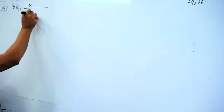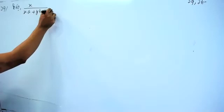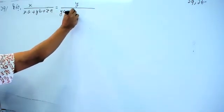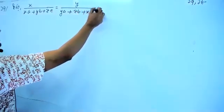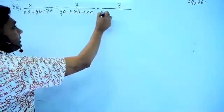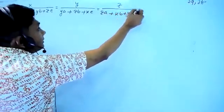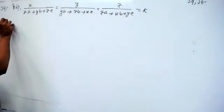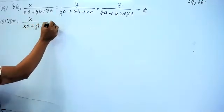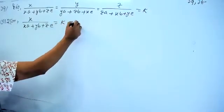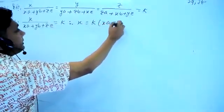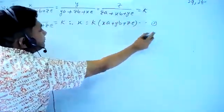x y: x a plus y b plus z c. y by y a plus z b plus x c. y by z a plus x b plus y c. 6y: x a plus y b plus z c equals 7k, so x equals k into x a plus y b plus z c.